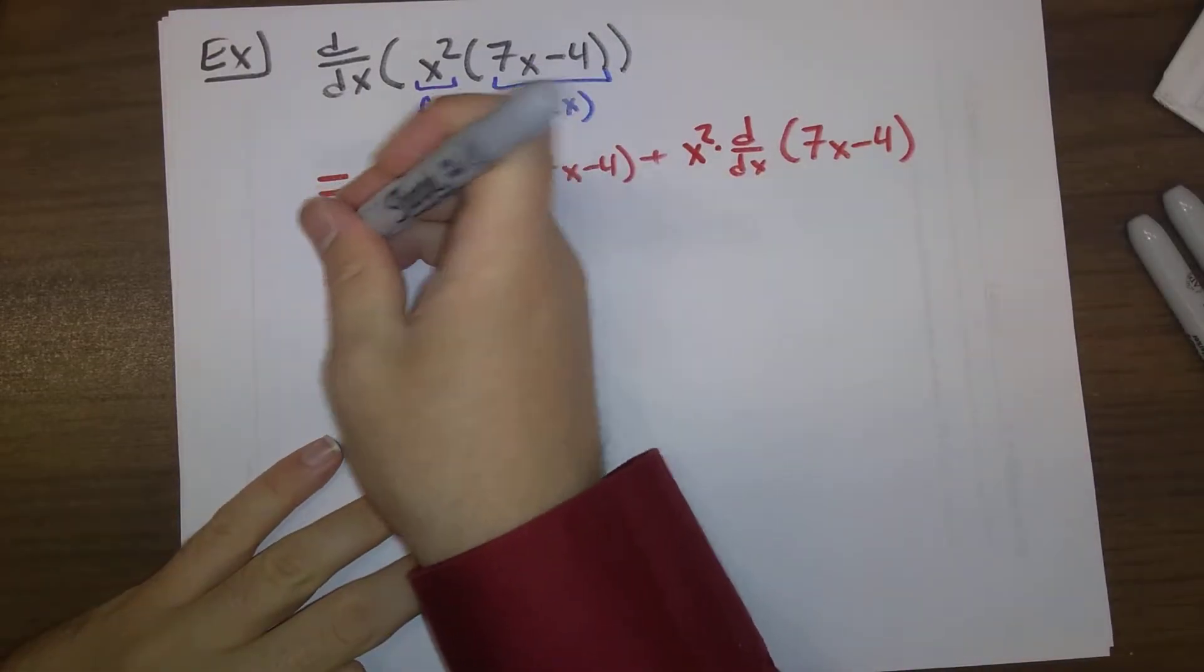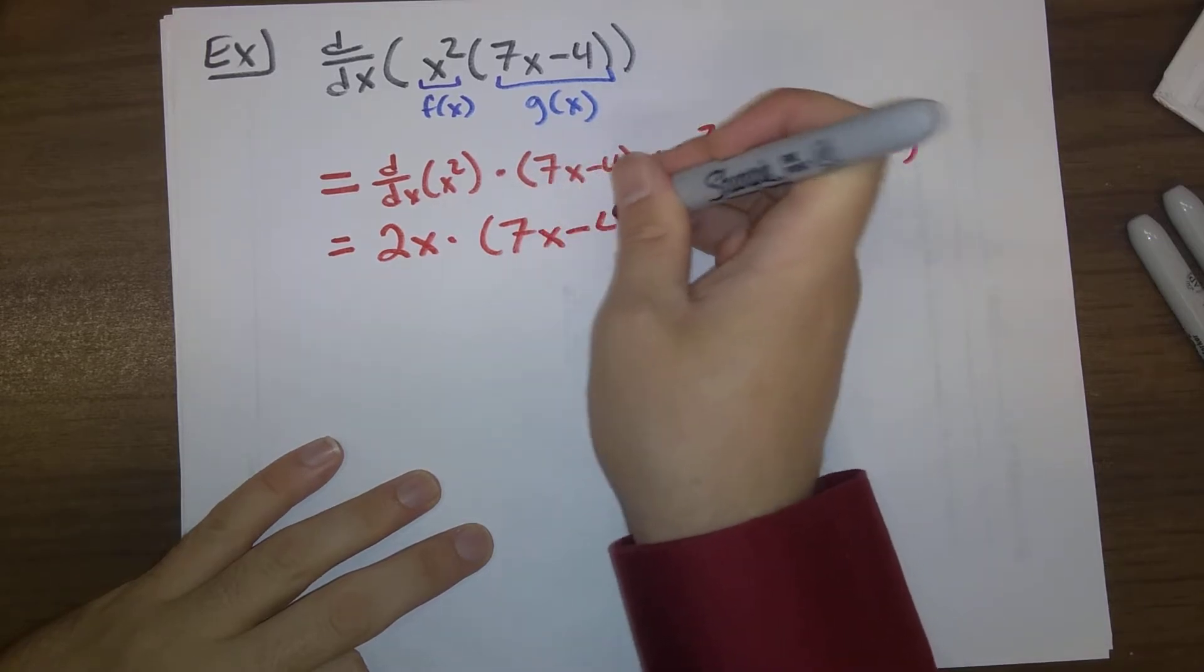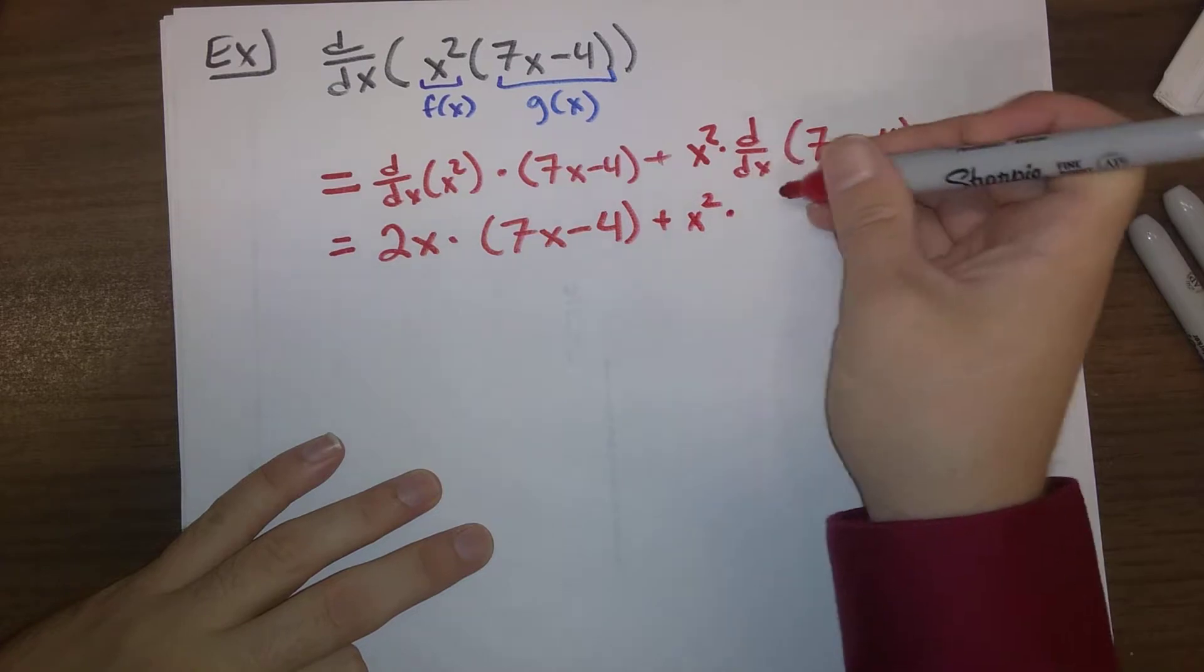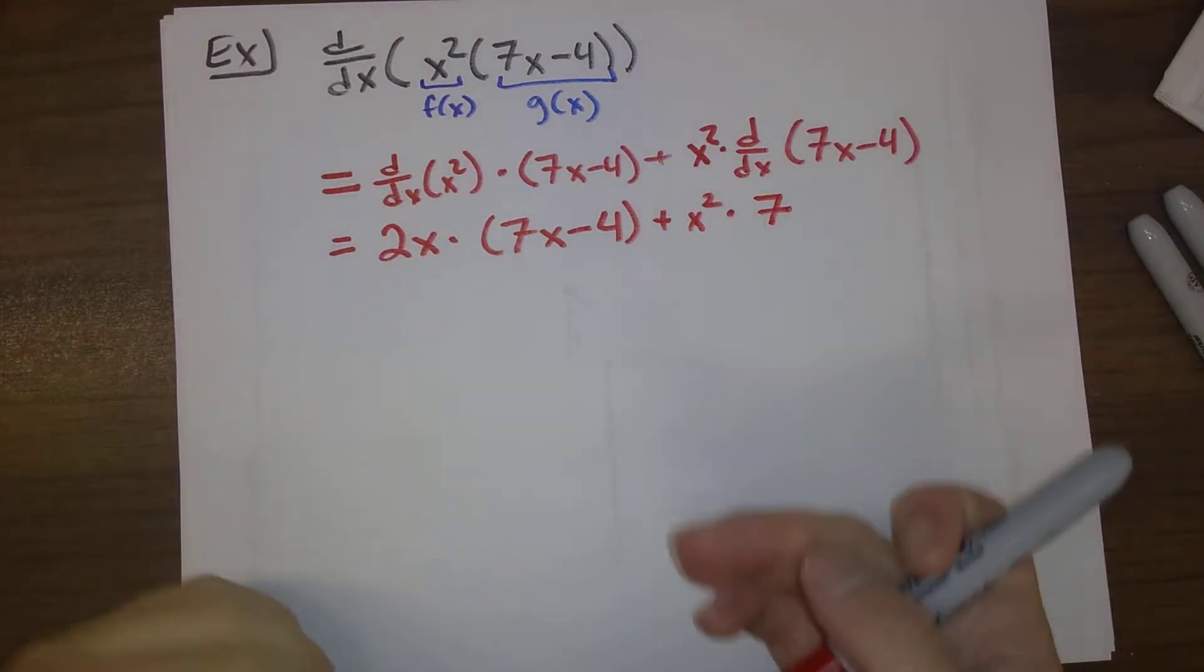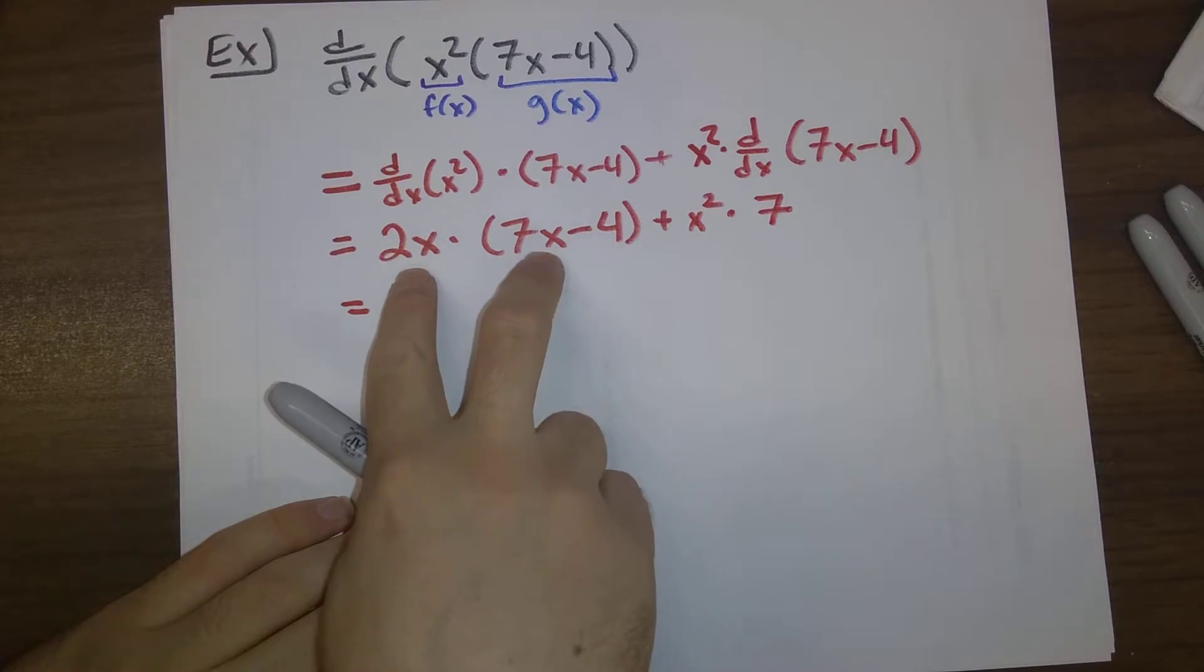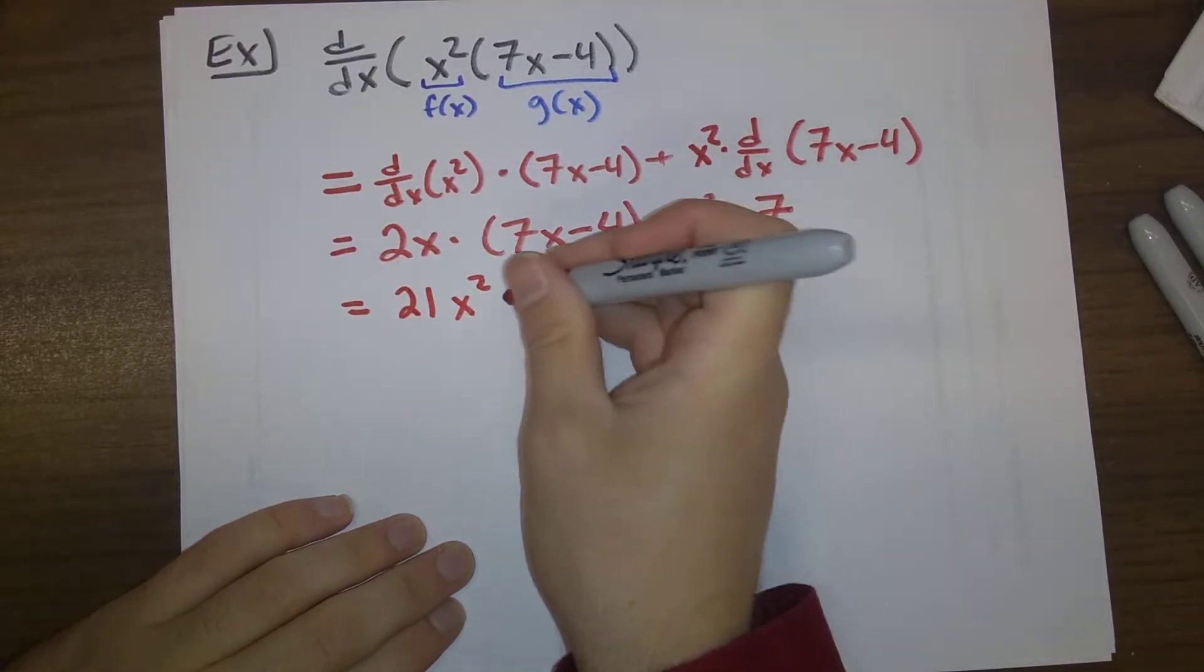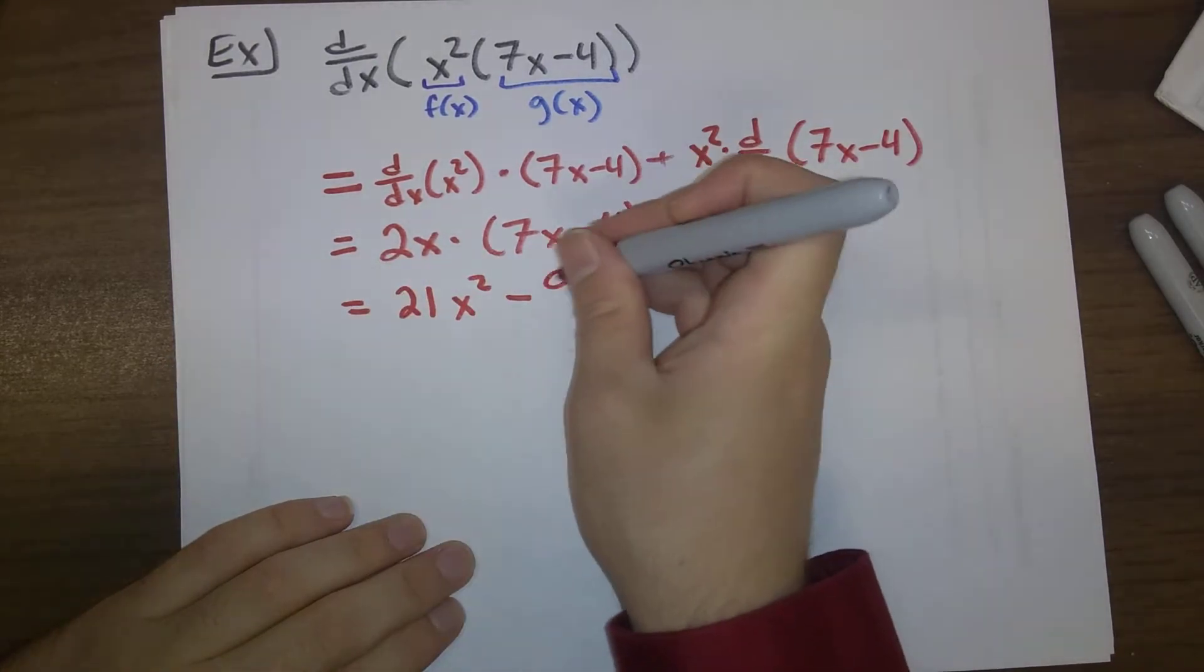I'm writing all this out in lots of detail. In the future, you might be able to do this more rapidly. But it's good to have everything written out in nice detail. Here is our answer. If you wanted to simplify this, if you wanted to expand everything out, it looks like we got 14x², 7x² is 21x² minus 4 times 2 is 8x.